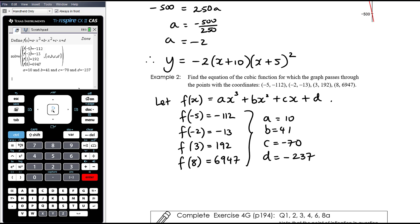Again, be clear about making sure you answer the question that's being asked. If the question might have said a cubic of the form y equals ax cubed plus bx squared plus cx plus d goes through these four points, find the values of a, b, c and d, in which case we would have finished our question here. But the question asks us to find the equation. And so therefore the equation is y equals 10x cubed plus 41x squared minus 70x minus 237.